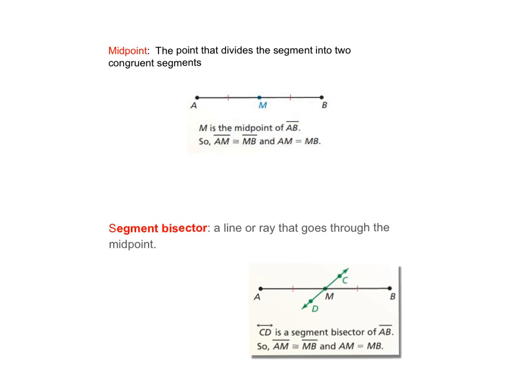I want you to pay attention to these two little red tick marks. In geometry, they mean these two line segments are congruent to each other.